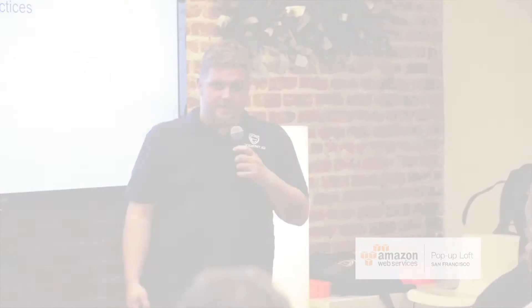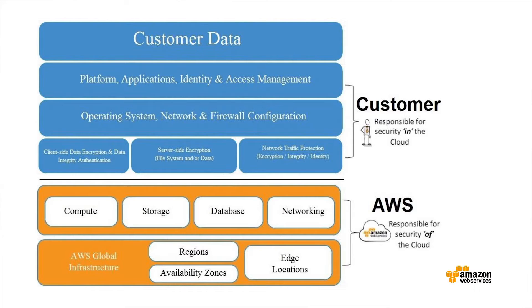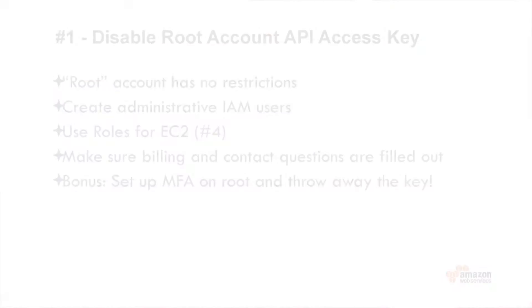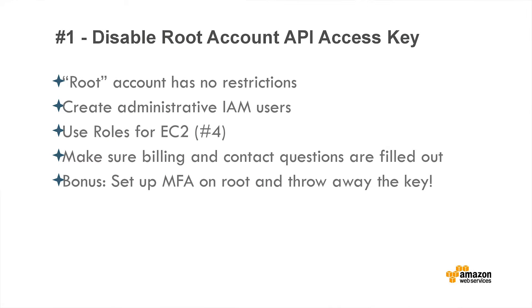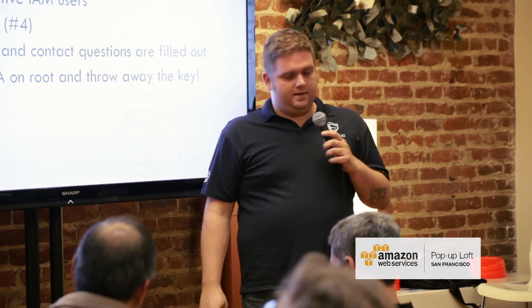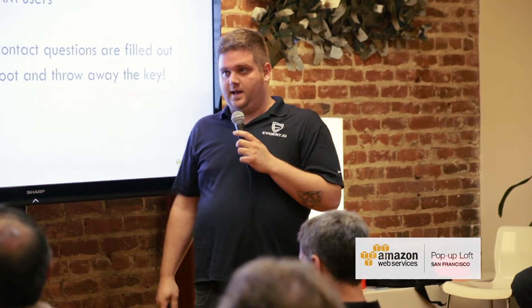We've seen these best practices operating some of the largest Amazon infrastructures out there. Everyone is familiar with the Amazon shared security model — about two-thirds of the audience feels comfortable with the shared responsibility model. So we're going to skip that. Number one: disable root account API access keys. You cannot restrict what that API key has the ability to do on Amazon.